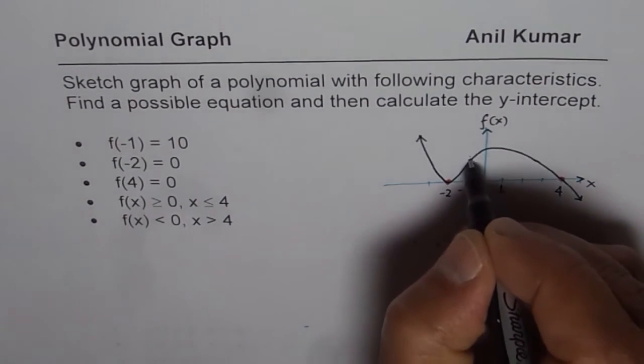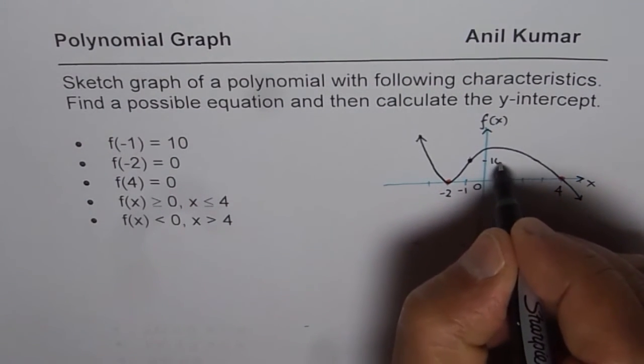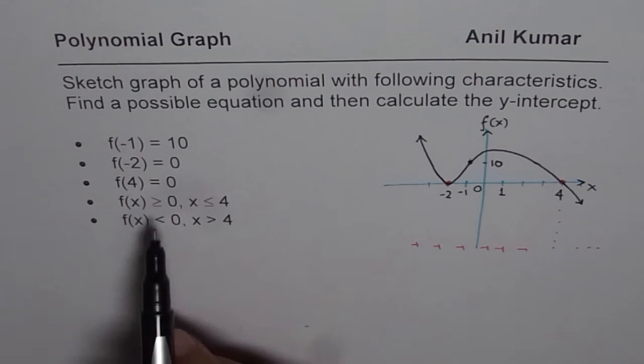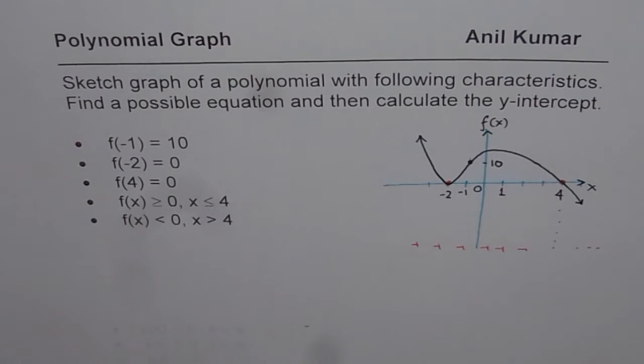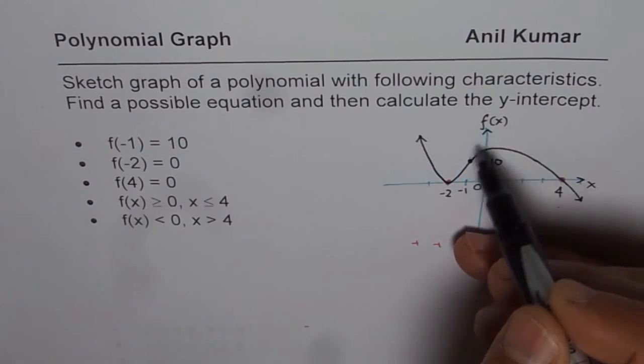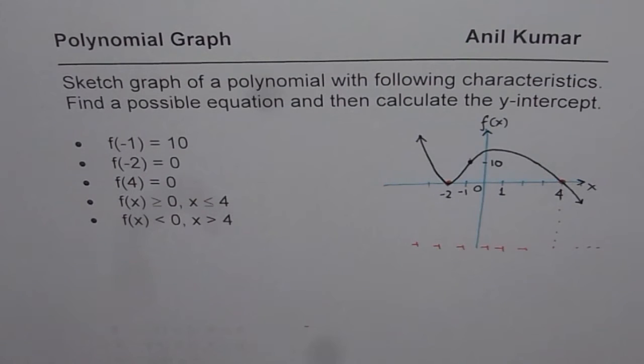And we can say at minus 1, this point is 10 for us. So that is one of the graphs which fulfills the given condition. I hope the concept is clear. We could make it like kind of steeper. We could make it wider depending on the stretch value. So we could have variety of graphs meeting these conditions.